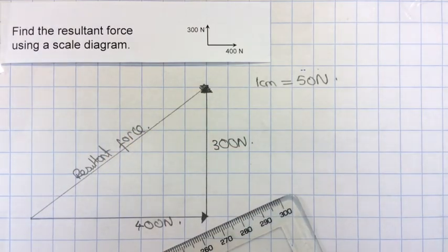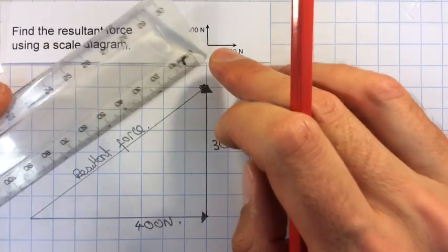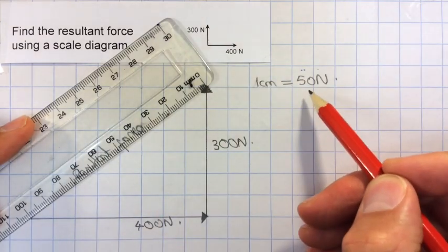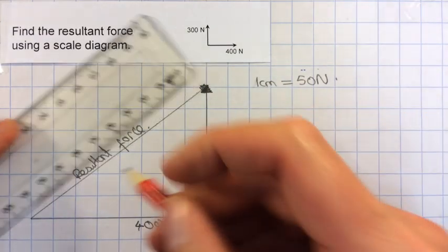And to find the size of that, I then need to use my ruler to measure the length of that, which I can do carefully, and that comes out to be 10 centimetres long, which therefore will be 500 newtons.